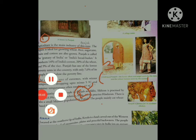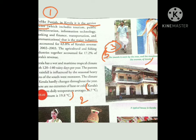Now come to page number 6 for Kerala. First point: unlike Punjab, in Kerala it is the service sector that is the major industry. Second point: Kerala's maximum daily temperature averages 36.7 degrees Celsius and the minimum 19.8 degrees Celsius. Third point: the mundu is worn by men and the mundum neriathu by women of Kerala.